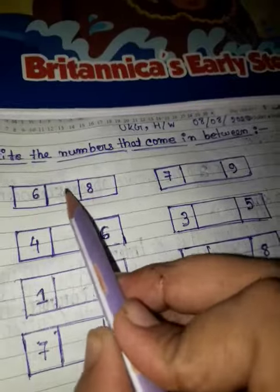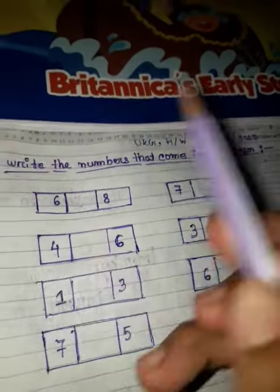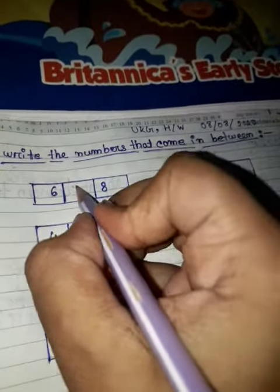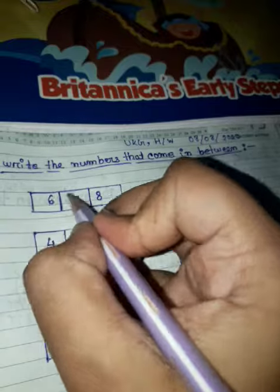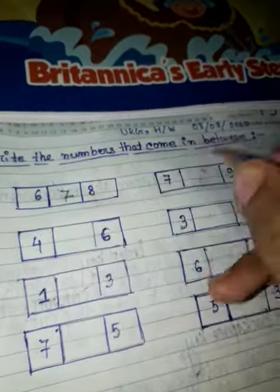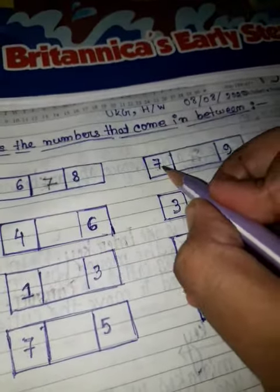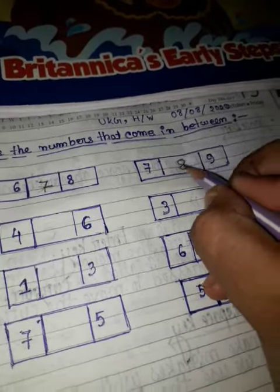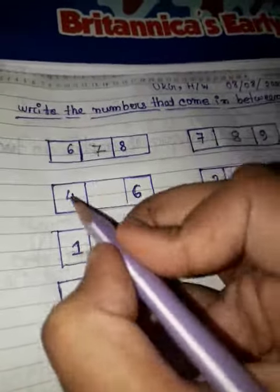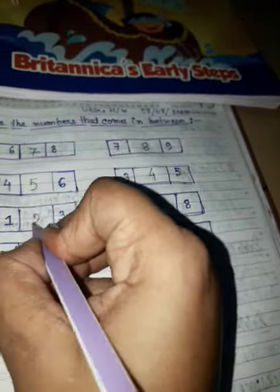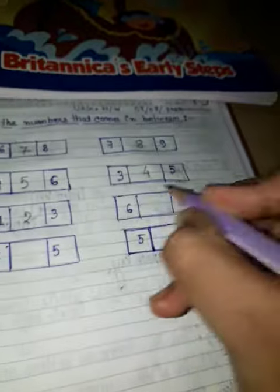6, 8 — and this is a 7. So: 6, 7, 8. Next: 7, 9 — answer is 8. Next: 7, 8, 9. Then: 4, 5, 6. Then: 3, 4, 5. Then: 1, 2, 3.